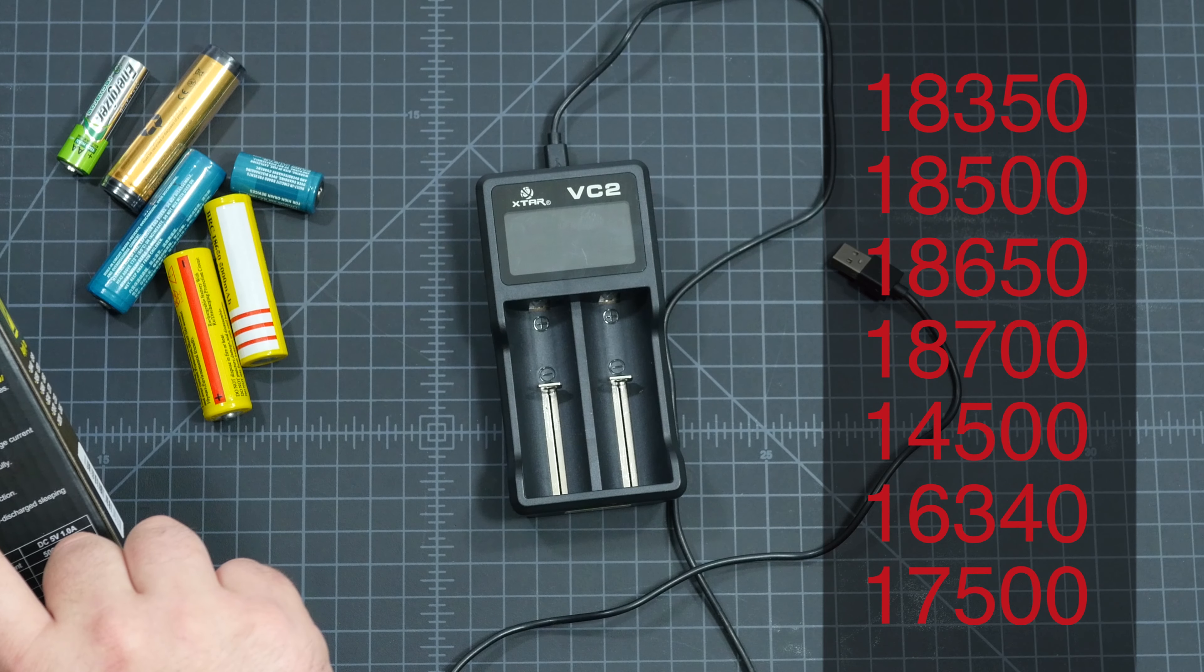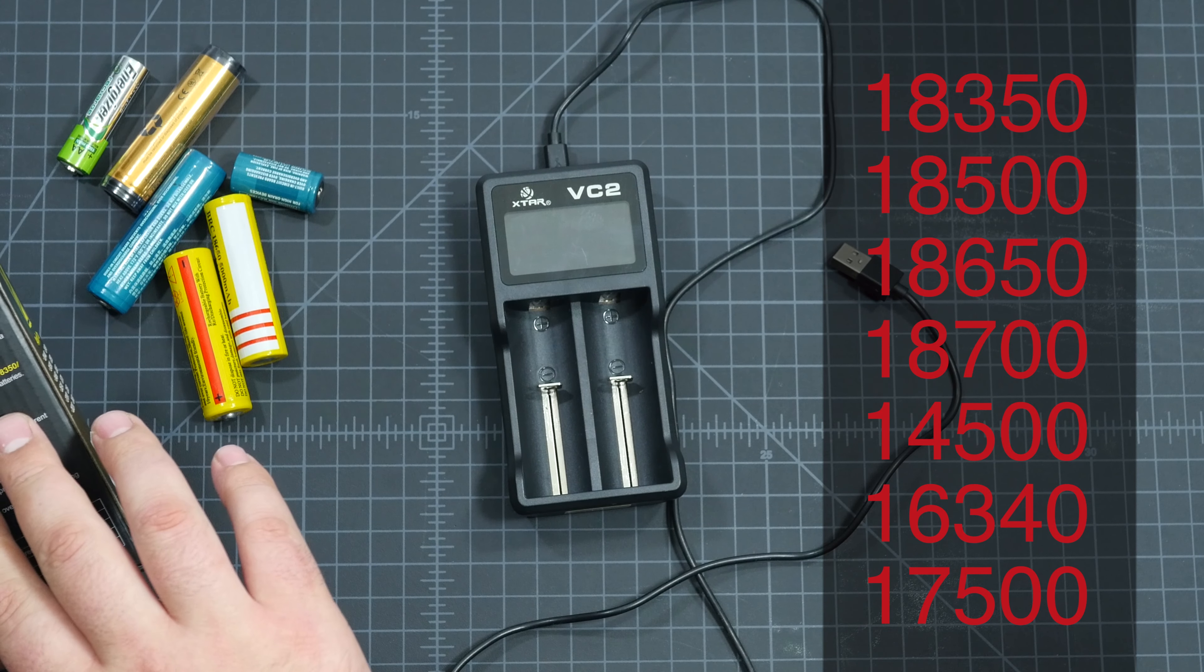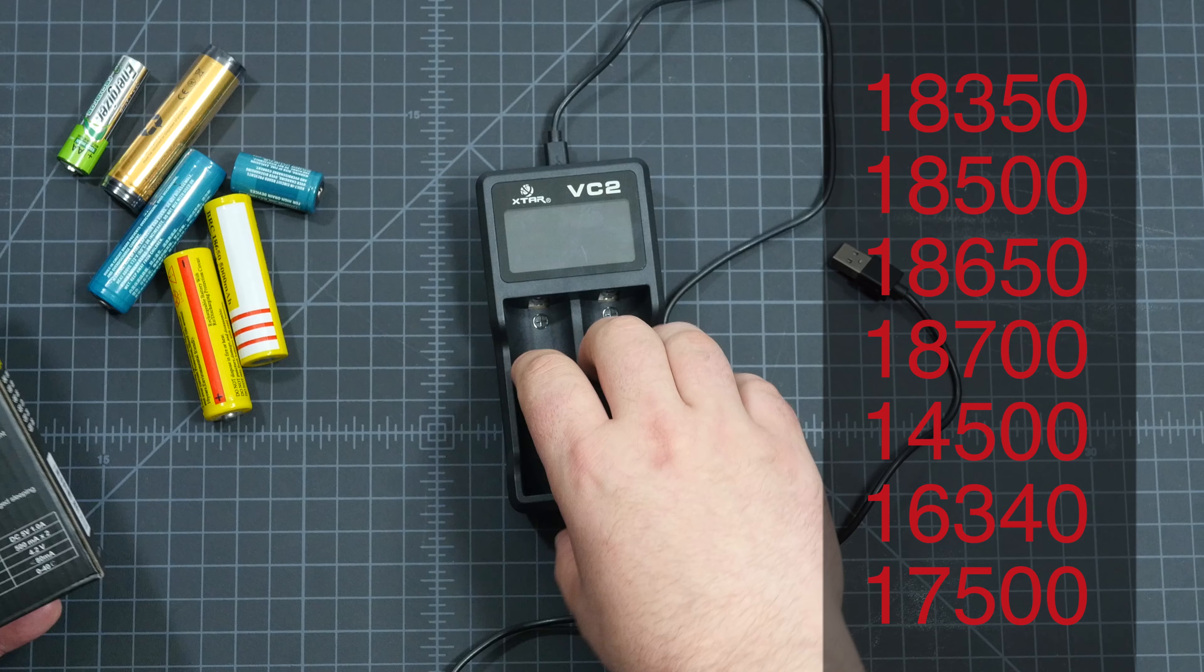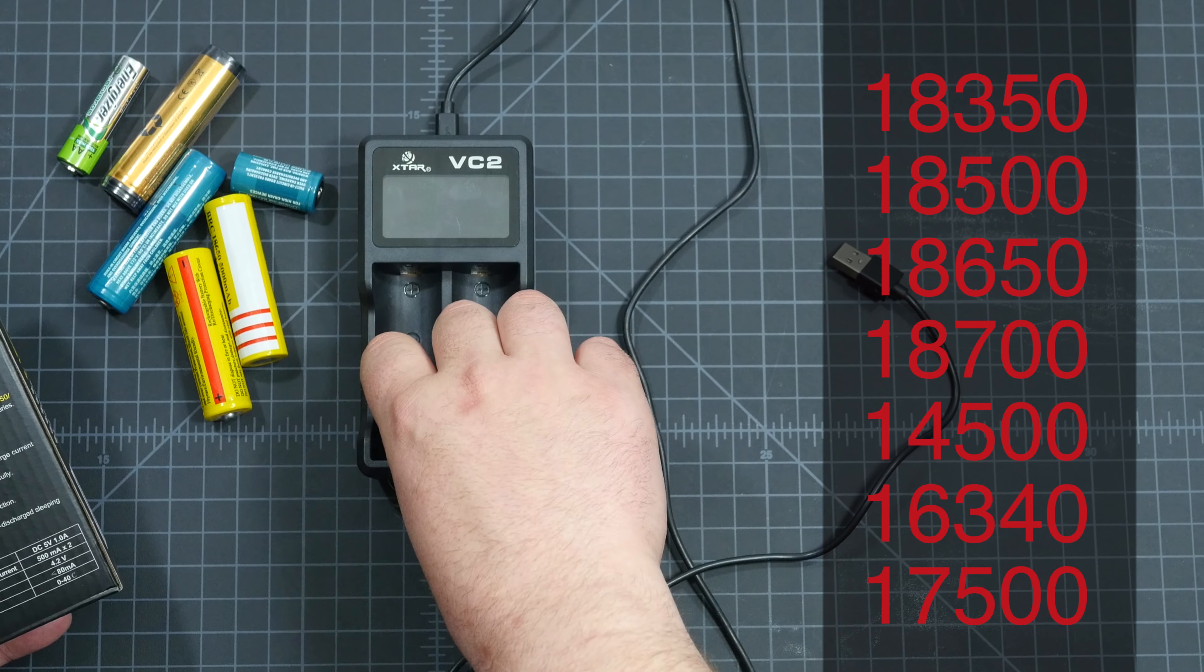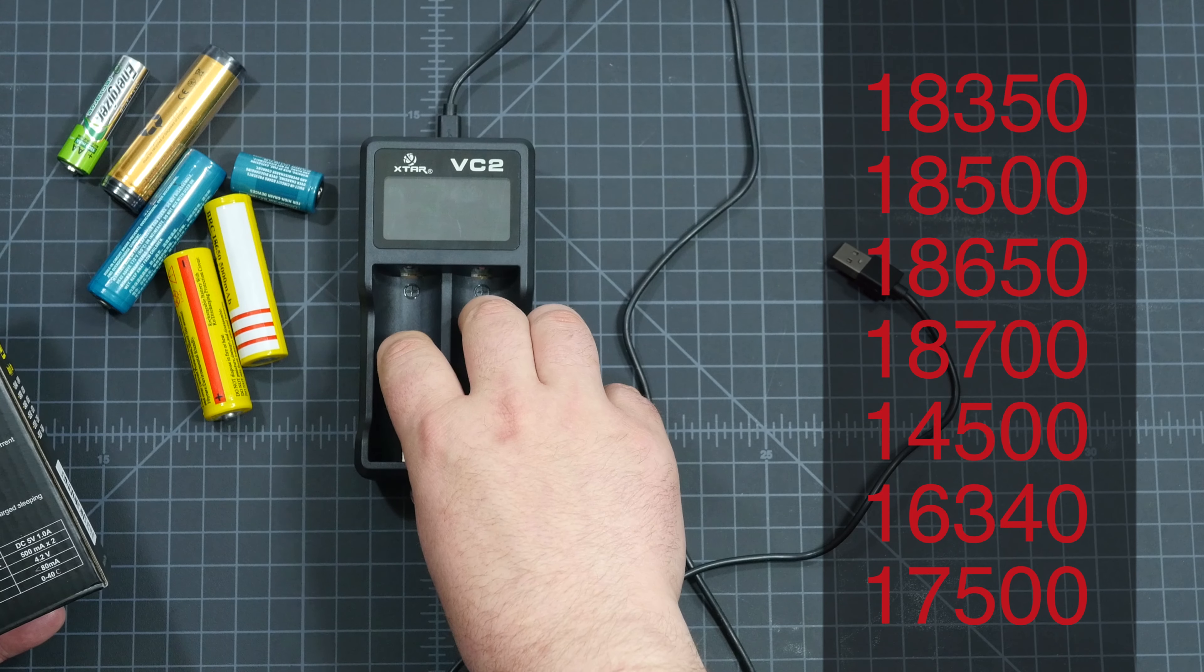We have 10440s, 16340, 14500. I'll put a list of them up, but what this does is it will charge any of those batteries and it shows the voltage and the current while it is charging.